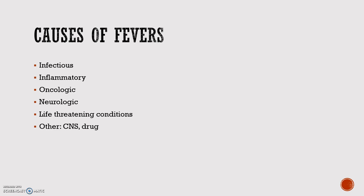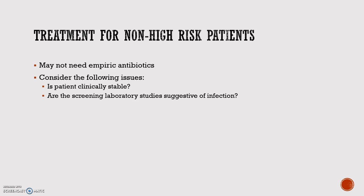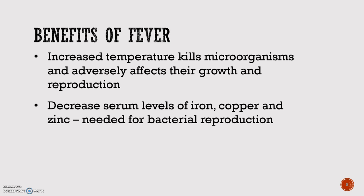Fevers of unknown origin is a fever that happens for three weeks or longer without an apparent cause, continues despite extensive investigation, and the patient presents with no neutropenia or immunosuppression. Not all patients require empiric antibiotic therapy, especially those not at high risk for sepsis. Consider deferring antibiotics for non-high-risk patients who are clinically stable with reassuring lab studies. There are benefits of fever, however. The increased temperature kills microorganisms, and it decreases the serum level of iron, copper, and zinc, which are needed for bacterial reproduction.